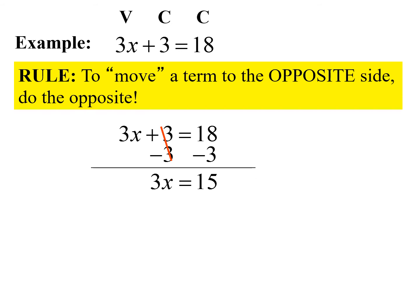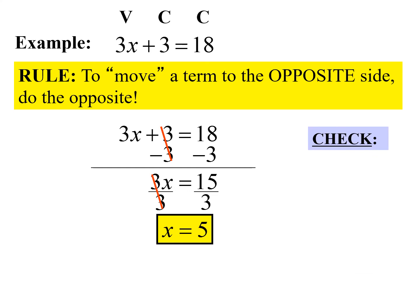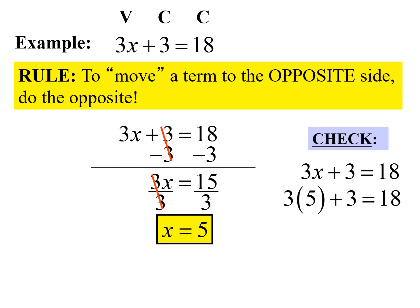We now have 3x equals 15. I need to get x by itself, so I undo multiplication — the inverse of multiplication is division — so I divide both sides by 3. Three divided by 3 is 1, and 1 times x is x, so it cancels. We get x is equal to 5. We can check this by substituting 5 for x: 3 times 5 plus 3 equals 18, which gives us 18 equals 18. Correct.